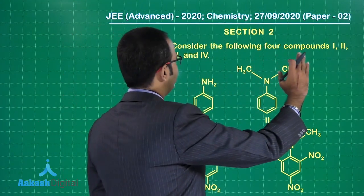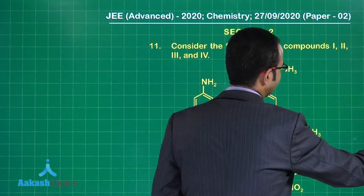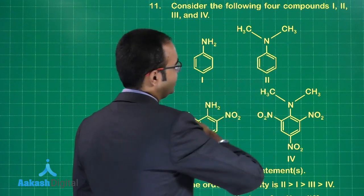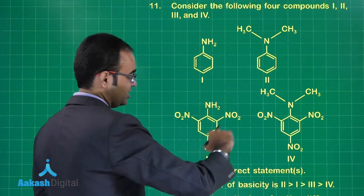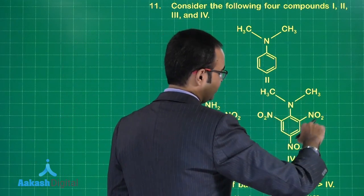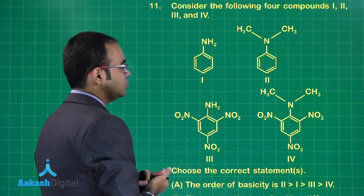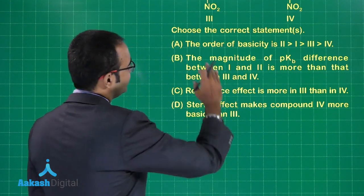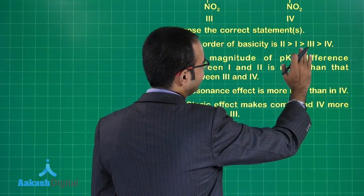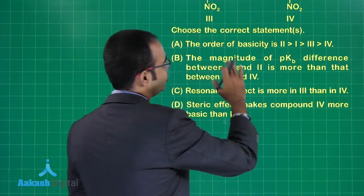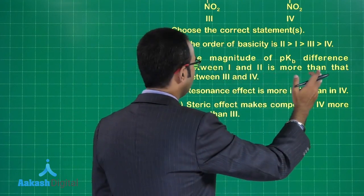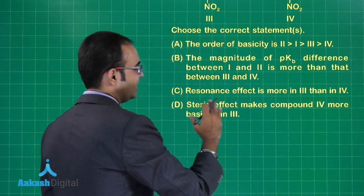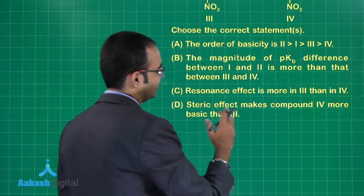Consider the following four compounds: 1, 2, 3, and 4. Structure 1 is aniline, structure 2 is a tertiary amine, structure 3 is aniline attached to 3 NO₂ groups, and structure 4 is a tertiary amine attached to 3 NO₂ groups. The options ask about: the order of basicity (2 > 1 > 3 > 4); the magnitude of pKb difference between 1 and 2 vs. 3 and 4; whether resonance effect is more in 3 than in 4; and whether steric effect makes compound 4 more basic than 3.